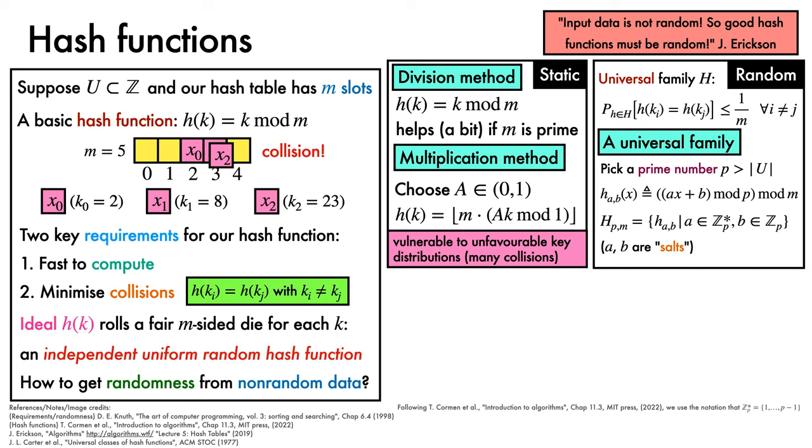At a high level, when coupled with sensible collision handling schemes, universal hash functions are less vulnerable than static hash functions to unfavourable key distributions. In particular, an adversary can no longer pick out a sequence in advance that will guarantee worst-case runtime.